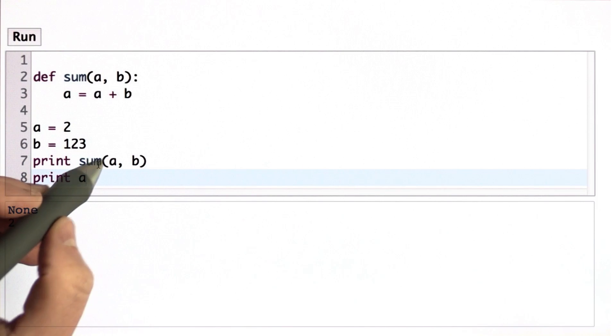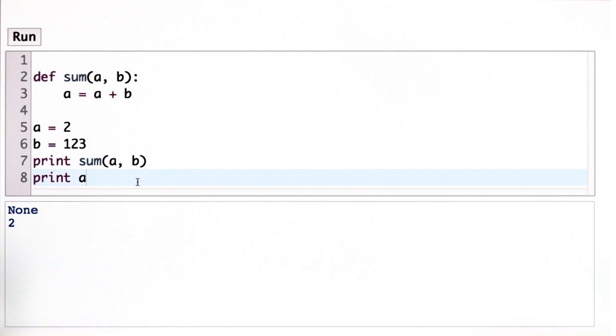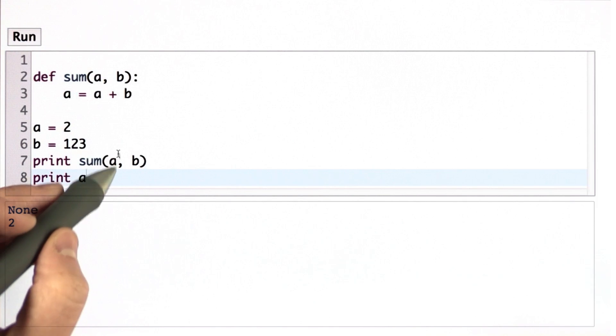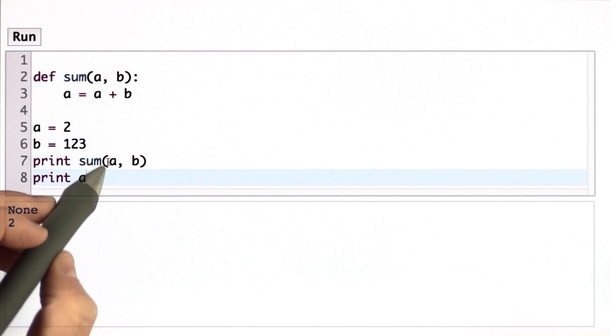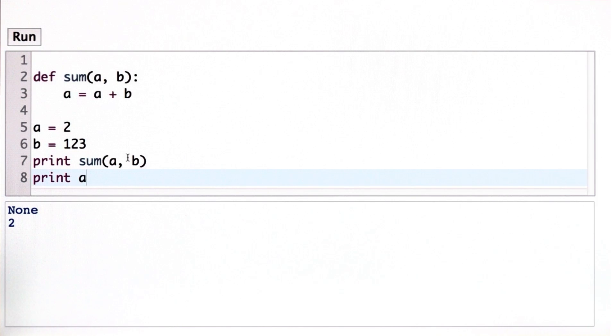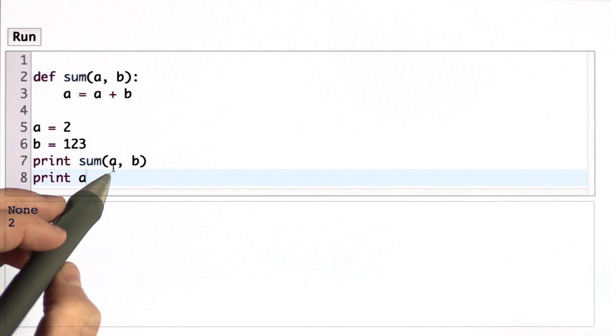And the reason it hasn't is what gets passed in here, even when we have a complex expression, even when we use a name or we have some calculation that produces the value. What gets passed in is the value that that evaluates to. So the fact that it was a name doesn't matter.